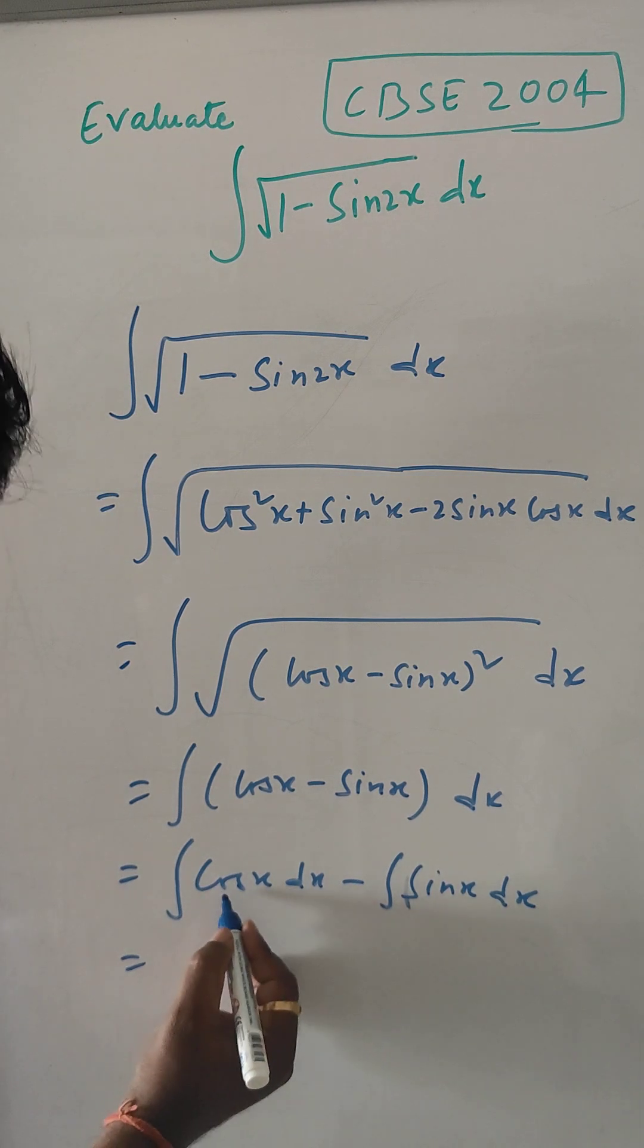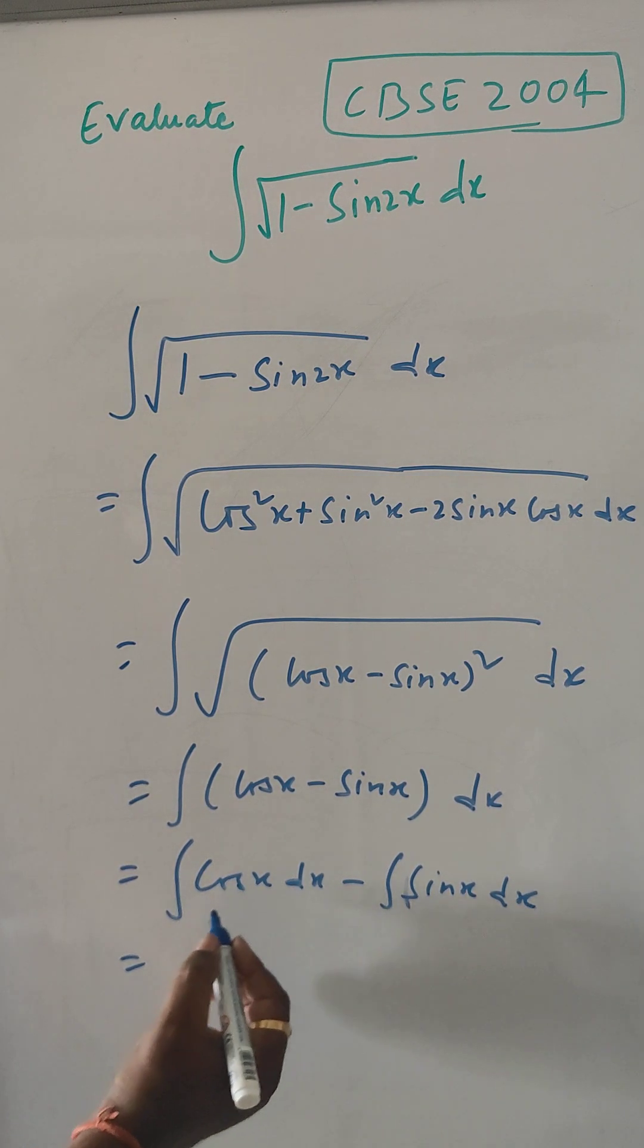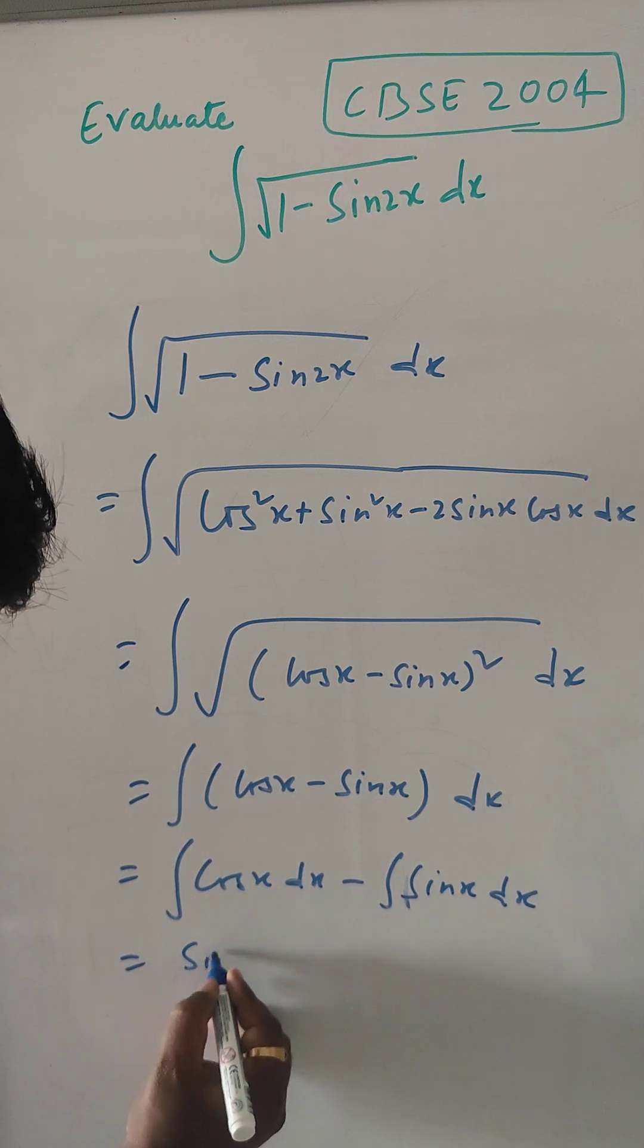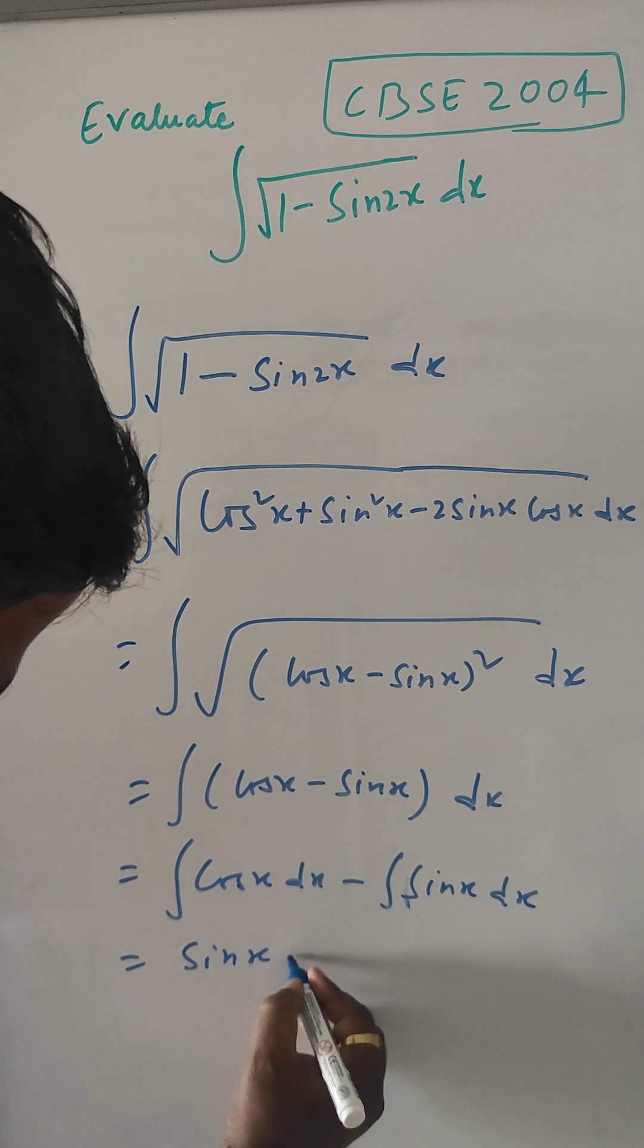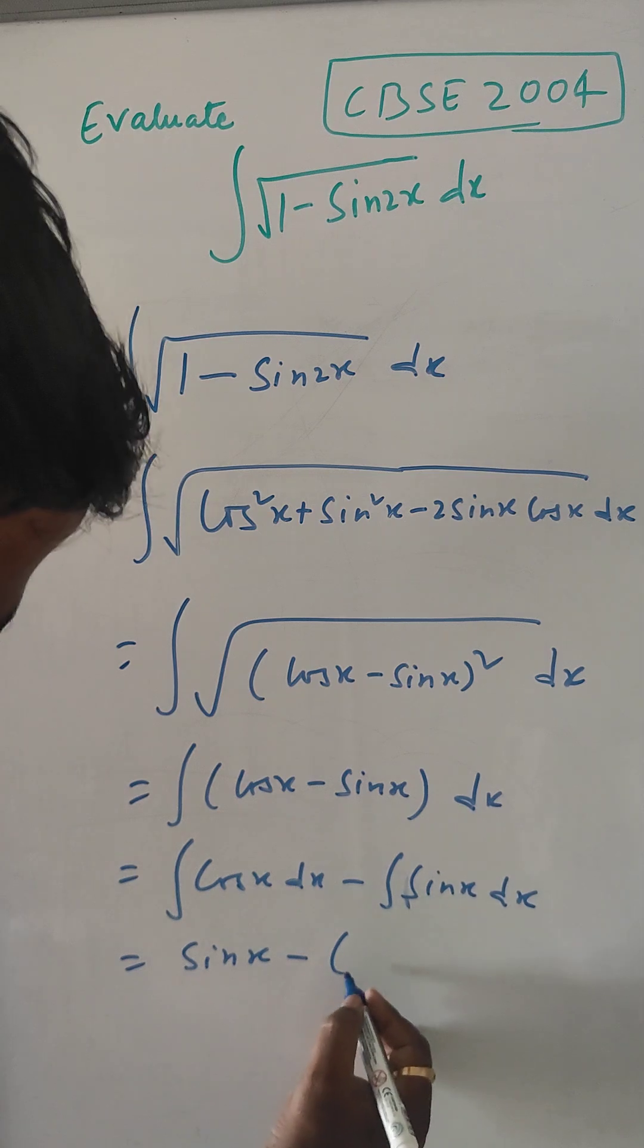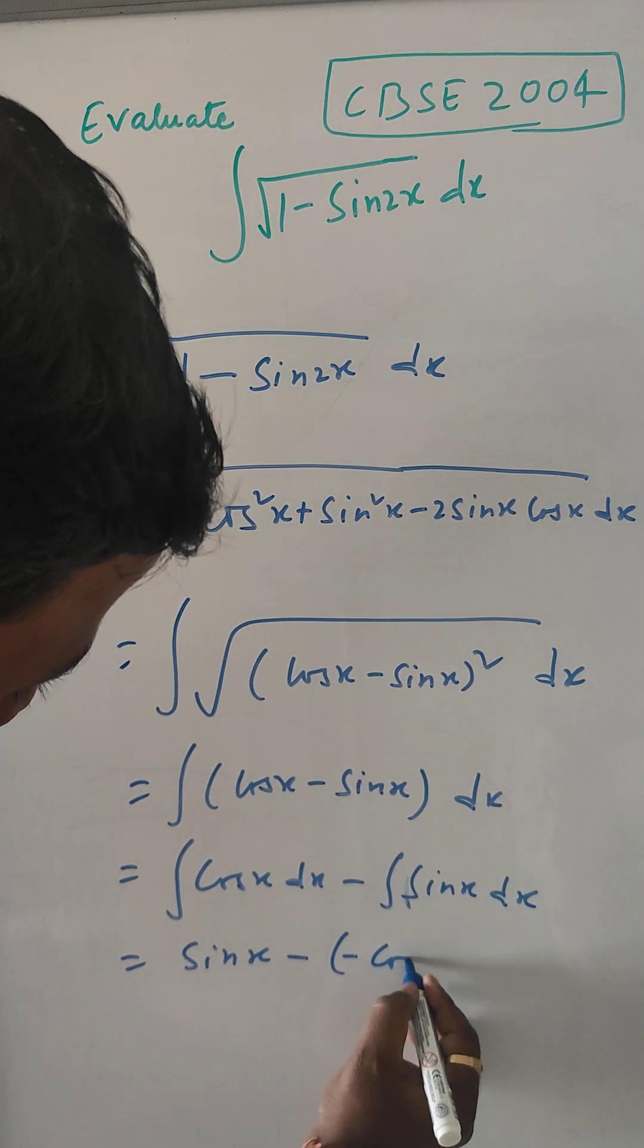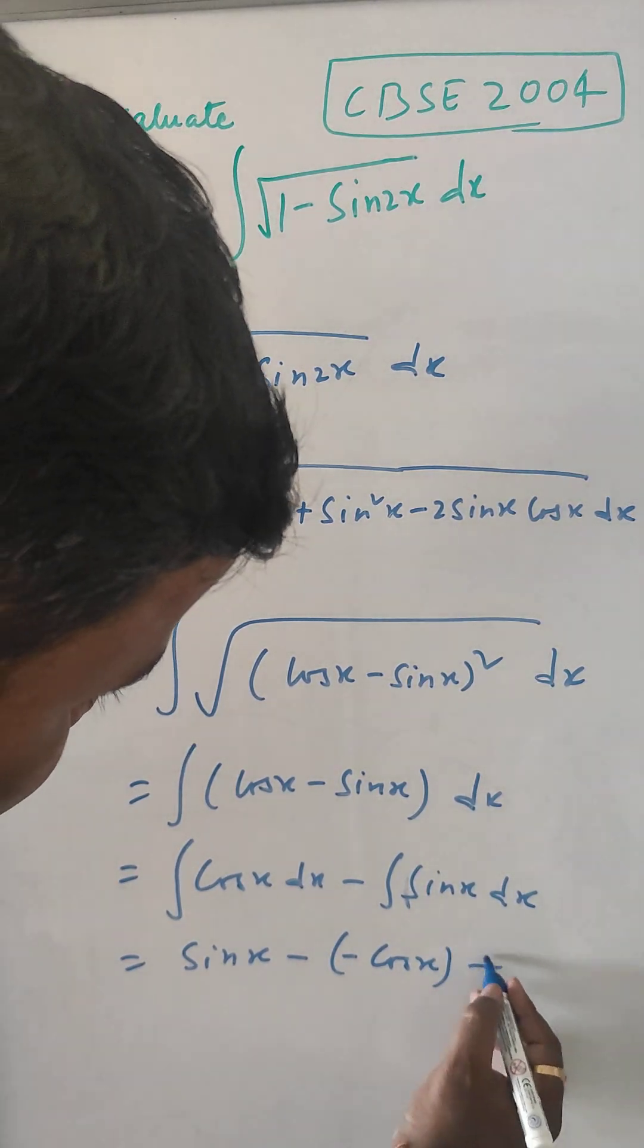So, here integral of cos x is your sin x and here for sin, it will be minus cos x and plus c.